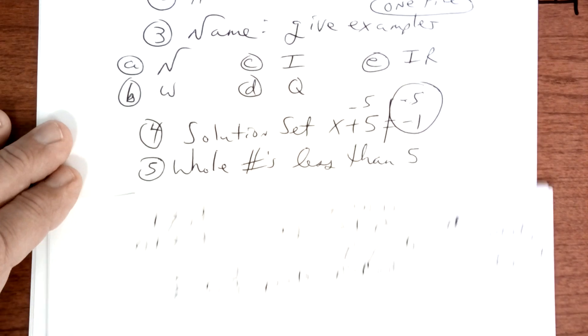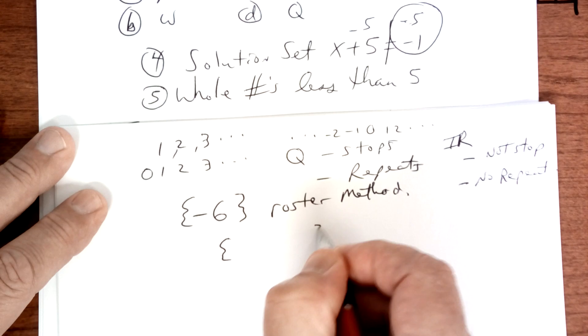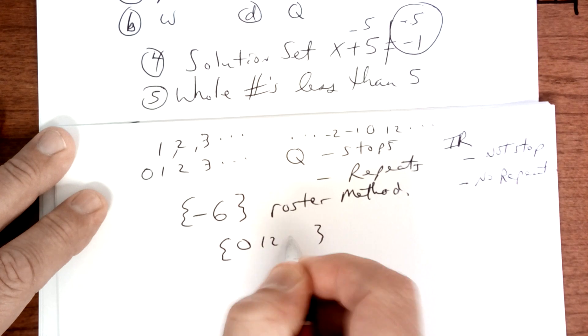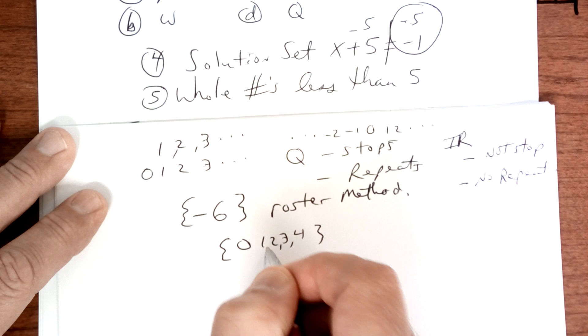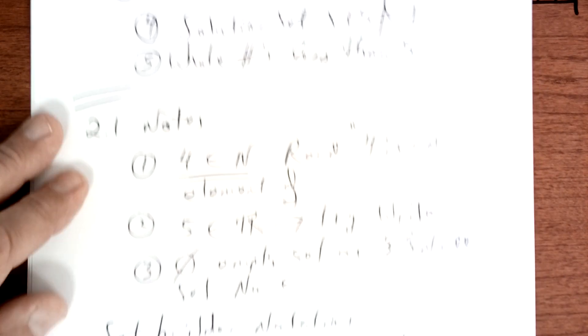Whole numbers less than five. That would be zero, one, two, three, and four. Okay, we have some notes here. Copy this down.